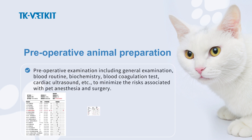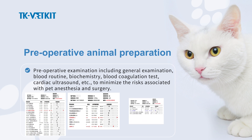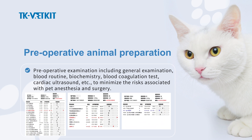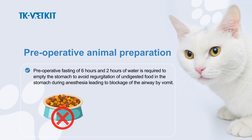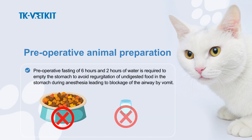Preoperative examination includes general examination, blood routine, biochemistry, blood coagulation test, cardiac ultrasound, etc., to minimize the risks associated with pet anesthesia and surgery. Preoperative fasting of 6 hours and withholding water for 2 hours is required to empty the stomach to avoid regurgitation of undigested food during anesthesia, which could lead to airway blockage by vomit.